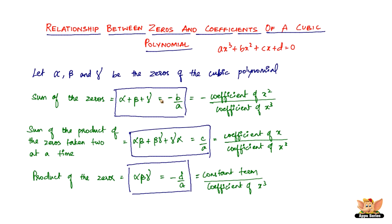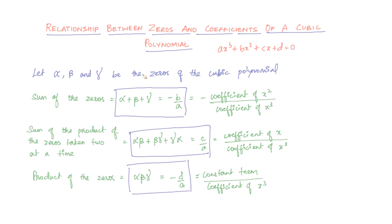So you need to remember and get familiar with all these relationships, and you should be able to solve problems based on the relationship between zeros and coefficients of a cubic polynomial pretty easily. This ends this video. I will see you in the following videos with problems based on the relationship between zeros and coefficients of a cubic polynomial. Thank you.